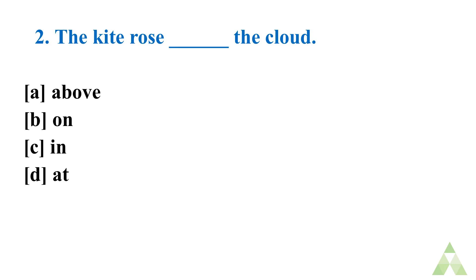Now let's move on to question number 2. The kite rose dash the cloud. Option A. Above. Option B. On. Option C. In. Option D. At. Just you have to storm your brain and answer. It's a very easy question.